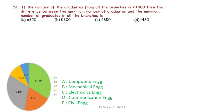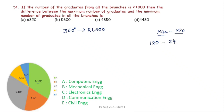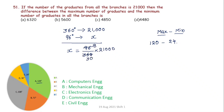If the total number of graduates from all branches is 21,000, with 360 degrees representing 21,000 students, find the difference between the maximum and minimum number of graduates. Maximum is 120 degrees, minimum is 24 degrees, difference is 96 degrees. So 96 divided by 360 into 21,000 gives 8 into 700, which equals 5600. Our answer is 5600.